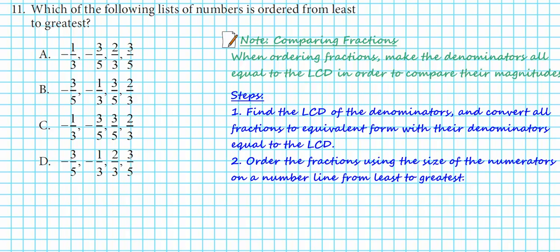Let's take a look at question number 11, which reads: which of the following lists of numbers is ordered from least to greatest? If you inspect the options, you'll notice that there are four numbers that repeat themselves in different orders in each of the options. So our goal is basically to identify and order these four numerical values. Let's pick option A and order the four fractions provided there, and whichever option matches that ordering pattern would be the correct answer.